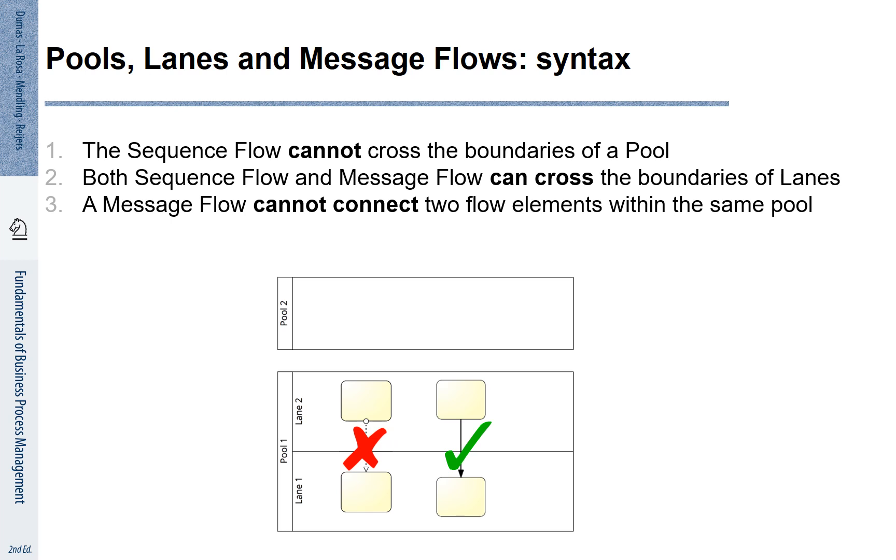In this way, sequence flow and message flow have a clear meaning. Message flow is used for information exchange between independent parties. These independent parties are shown as separate pools. Inside one pool, activities are connected with sequence flow.